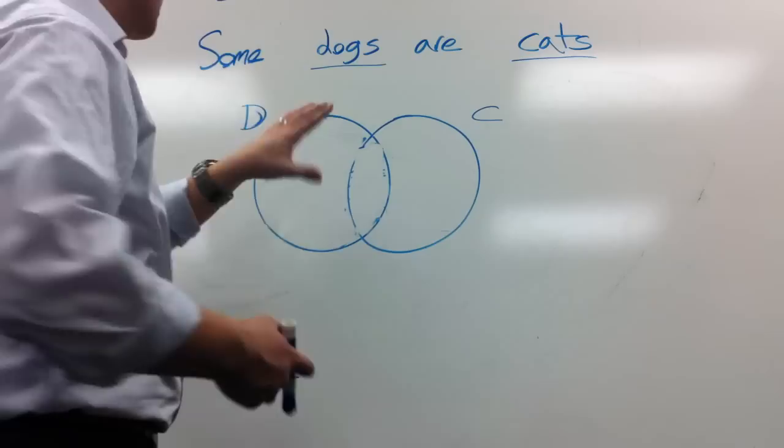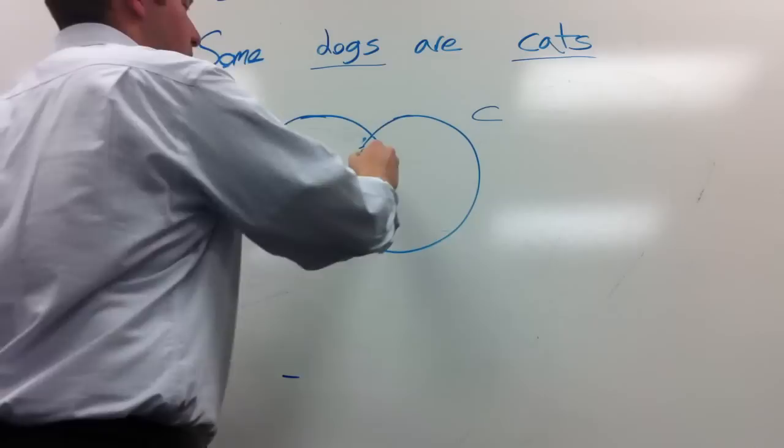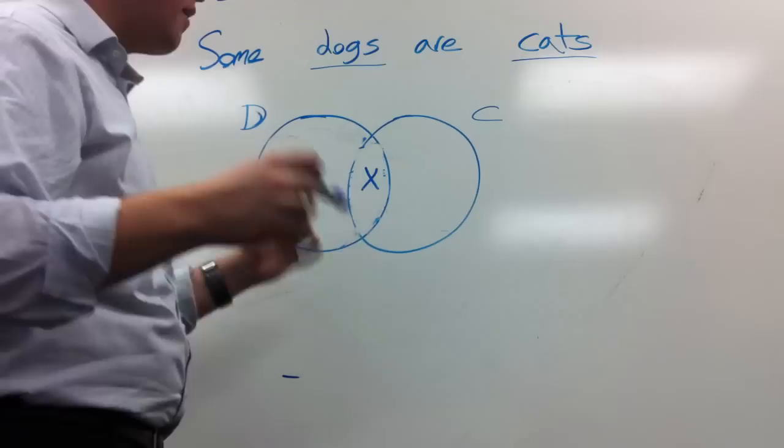So we're trying to say that there's something in the dog circle that's also in the cat circle. There's something that's both a dog and a cat. So we put an X in the middle. I don't know how many dogs are cats. I just know that there's something in the overlap. So every single I statement, you put an X in the overlap. It's that simple.